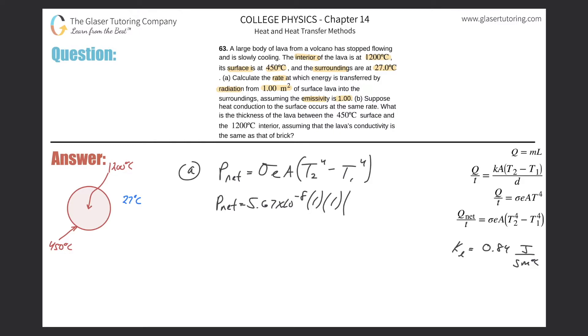And the temperature difference between the two. Now it depends on what you're calculating the rate of. If you're calculating the rate of heat loss from the lava to the surroundings, then your value here would be negative. If you're calculating the rate of heat gain by the surroundings from the lava, then it would be positive.